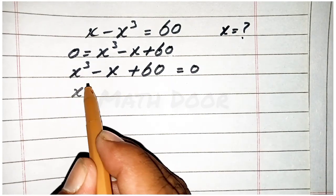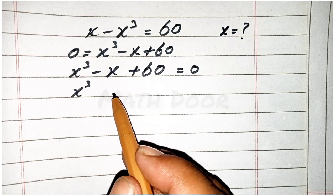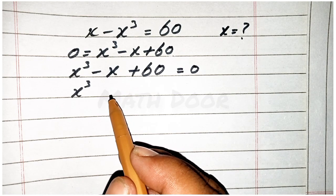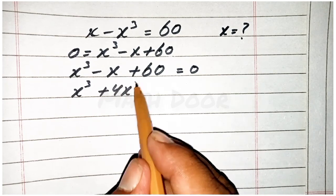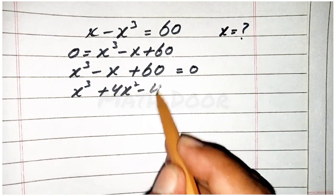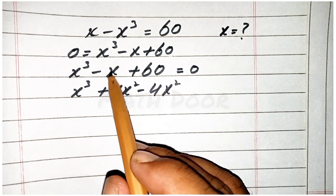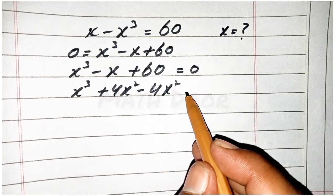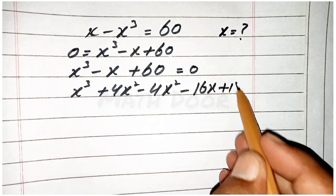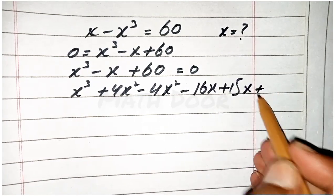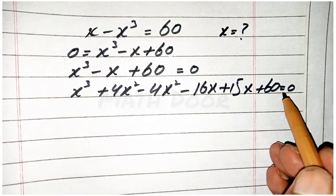To solve x cube, we add and subtract 4x square and also minus 4x square. And this minus x is equal to minus 16x plus 15x, and last one is 60, is equal to 0.